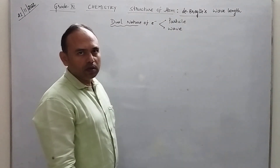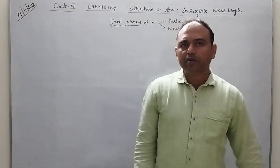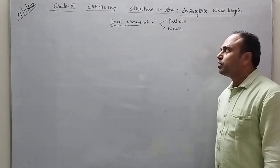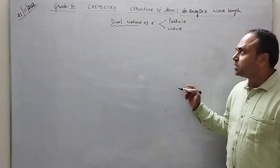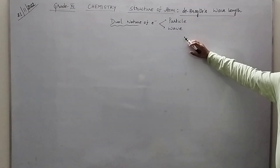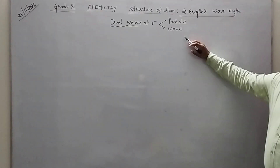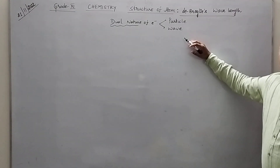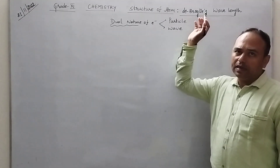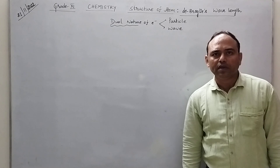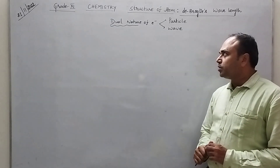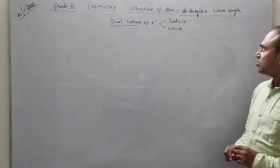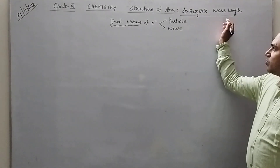Good evening students. Today we are going to discuss an important topic in structure of atom, that is dual nature of electron. In that we have two important formulae, one given by de Broglie and another one is Heisenberg's uncertainty principle. So in today's lecture let us talk about de Broglie's wavelength.